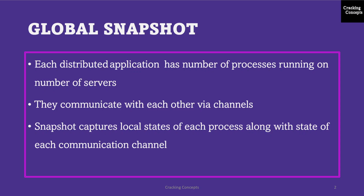A global snapshot is a global state. Each distributed application has a number of processes running on a number of physical servers. These processes communicate with each other via channels by messaging. A snapshot captures the local states of each process, e.g. their program variables, along with the state of each communication channel.